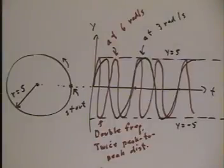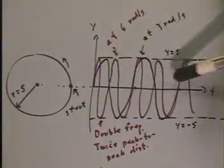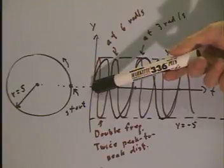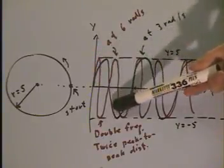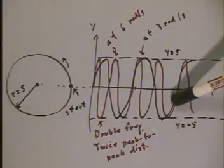If the paper is pulled at a constant rate, then I'll move at a constant rate to the right, and I'll trace out a curve, much like the black curve you see here.